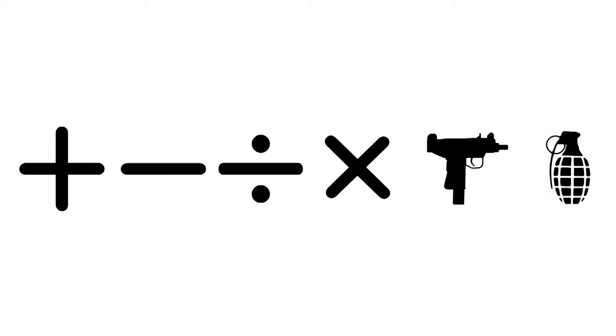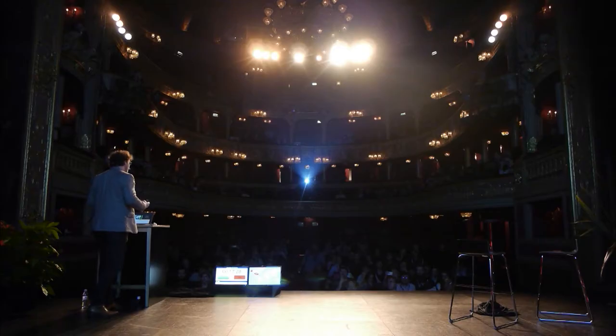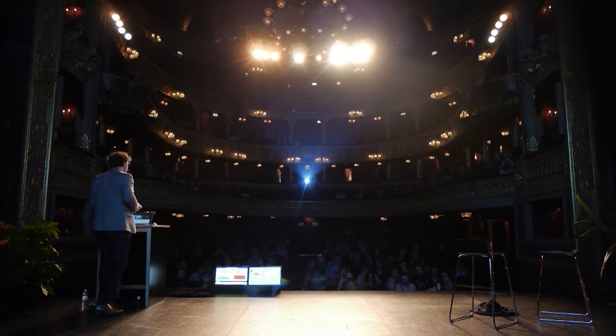In the United States, encryption — cryptographic software that implemented encryption — was considered a munition. In fact, cryptographic software that used security of a decent amount, such as 128 bits, was not allowed to be exported outside of the United States.